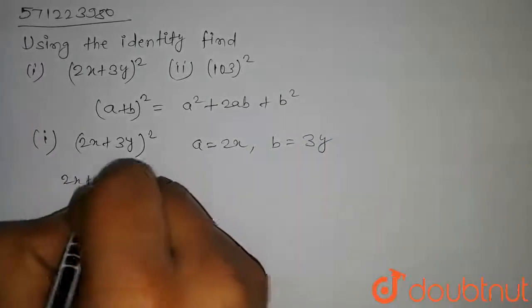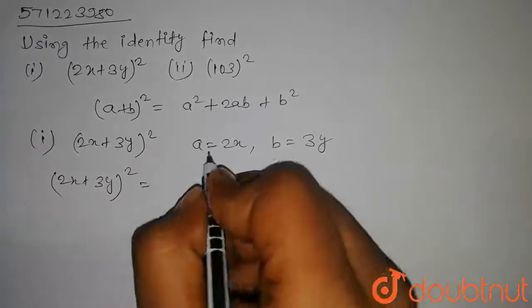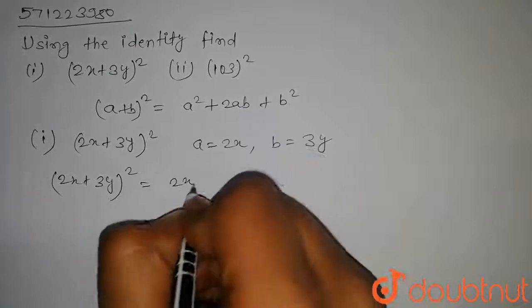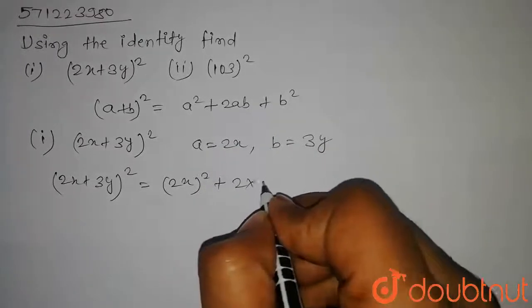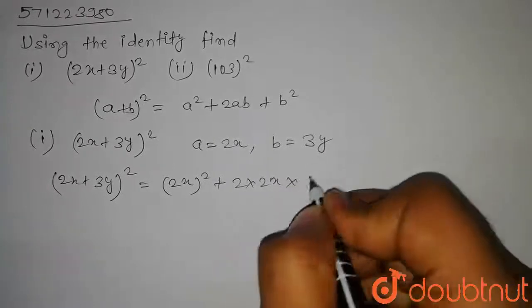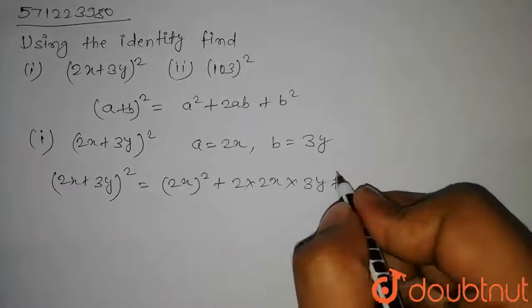(2x + 3y)² whole square will be equal to a² that is (2x)² plus 2 into a, here a is 2x, into b that is 3y plus b², here b is 3y.